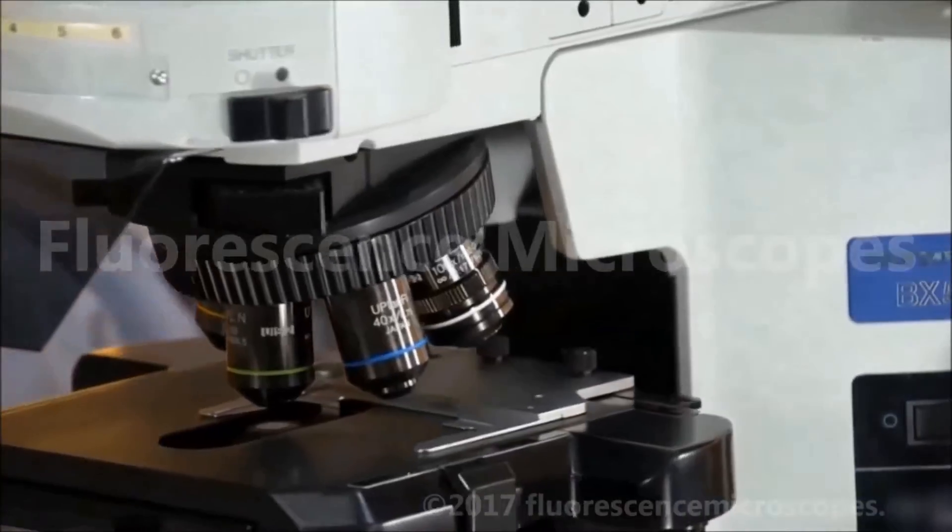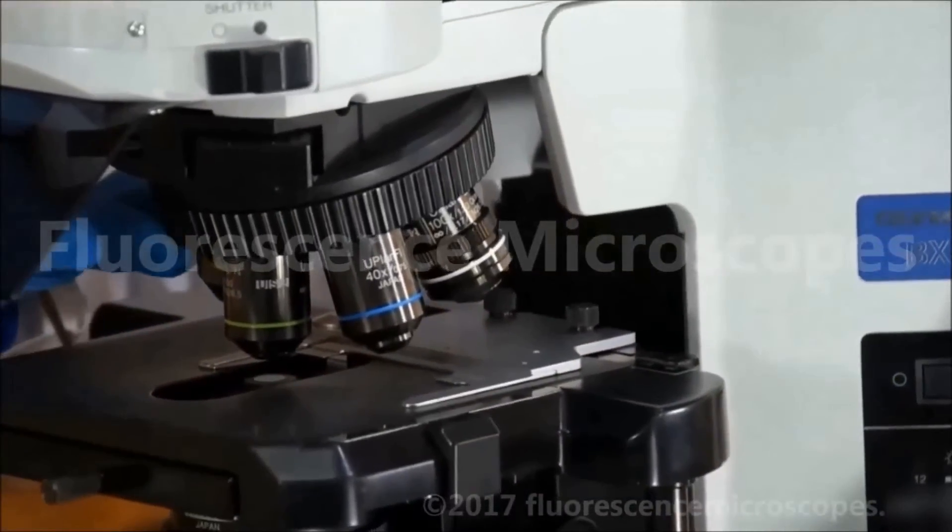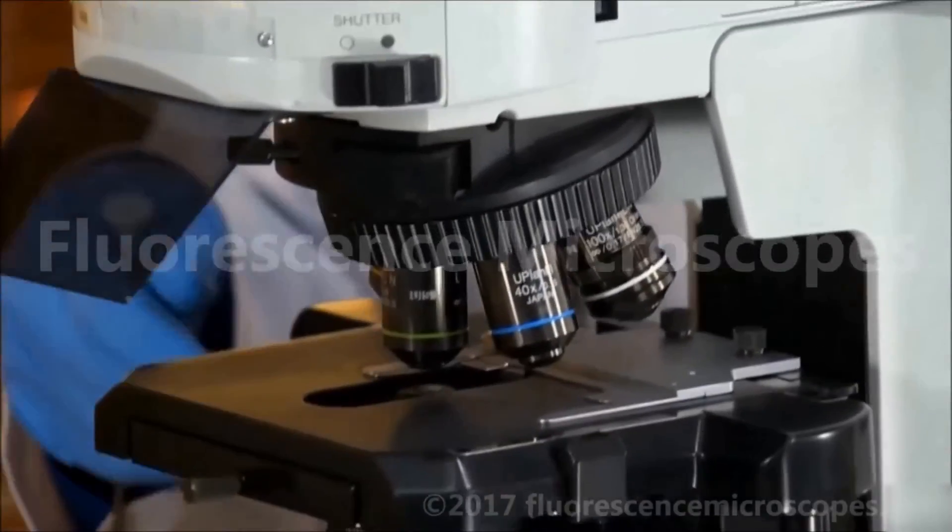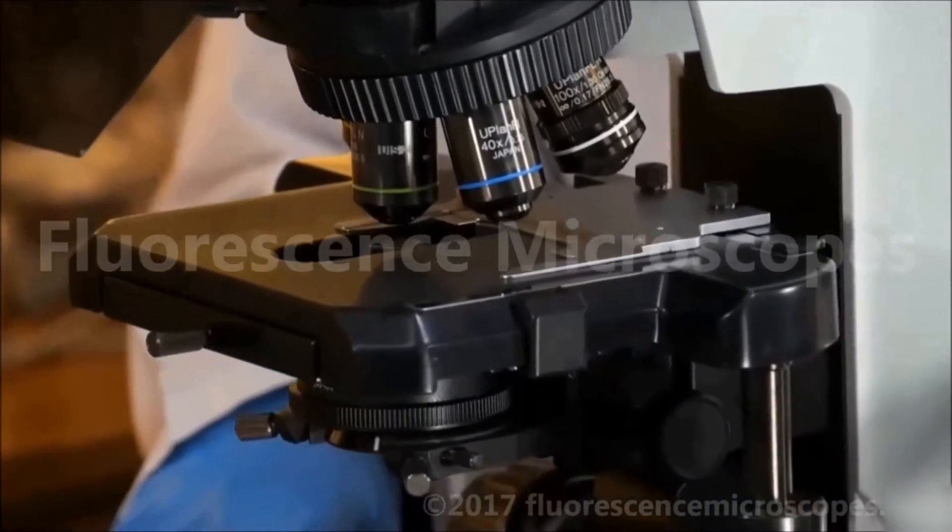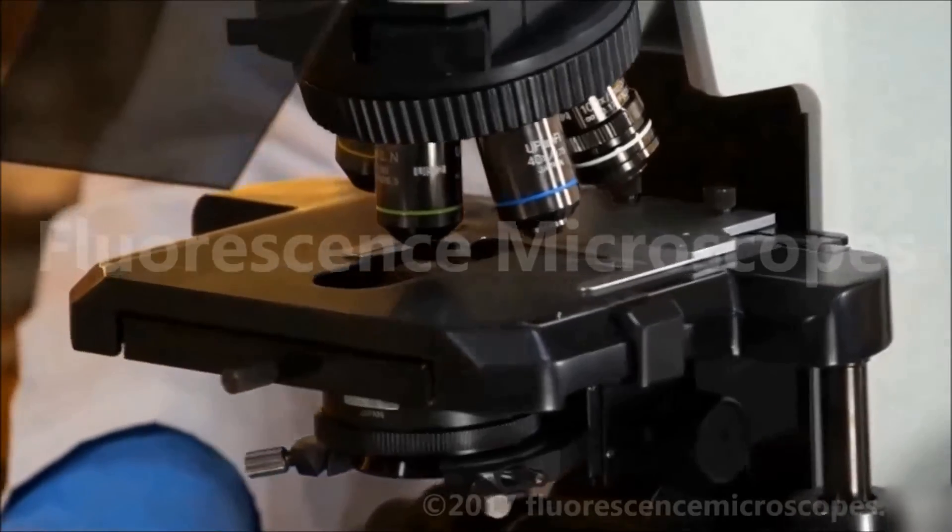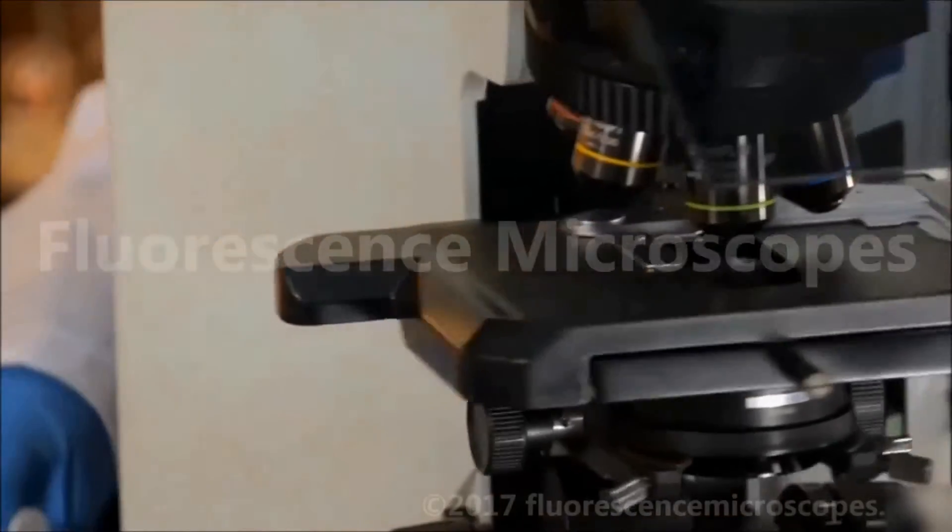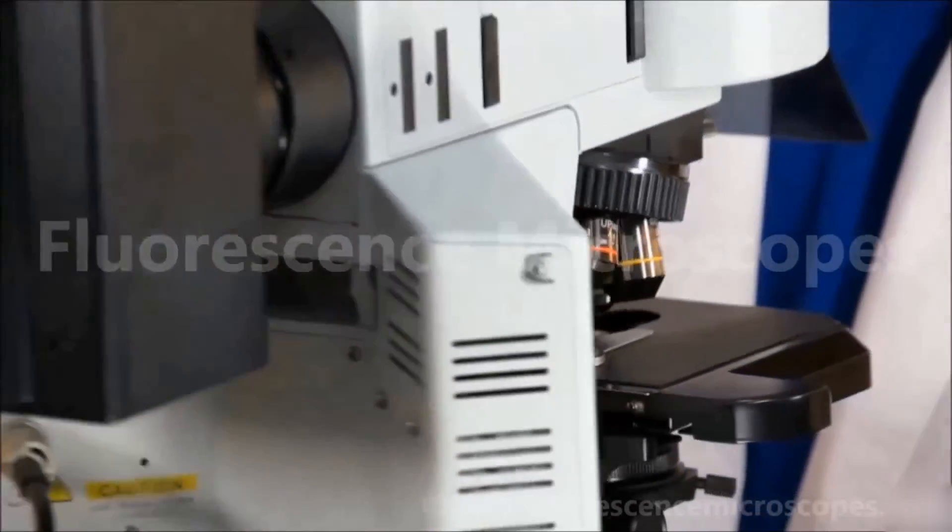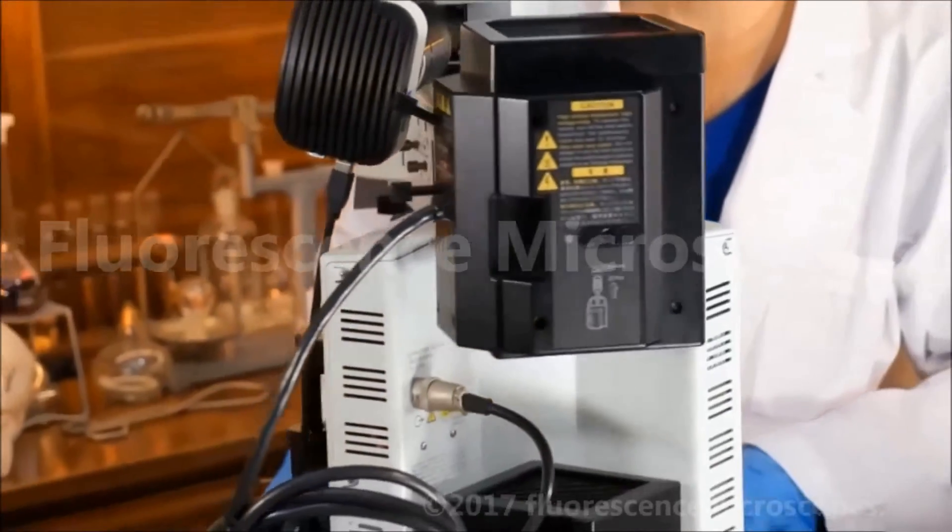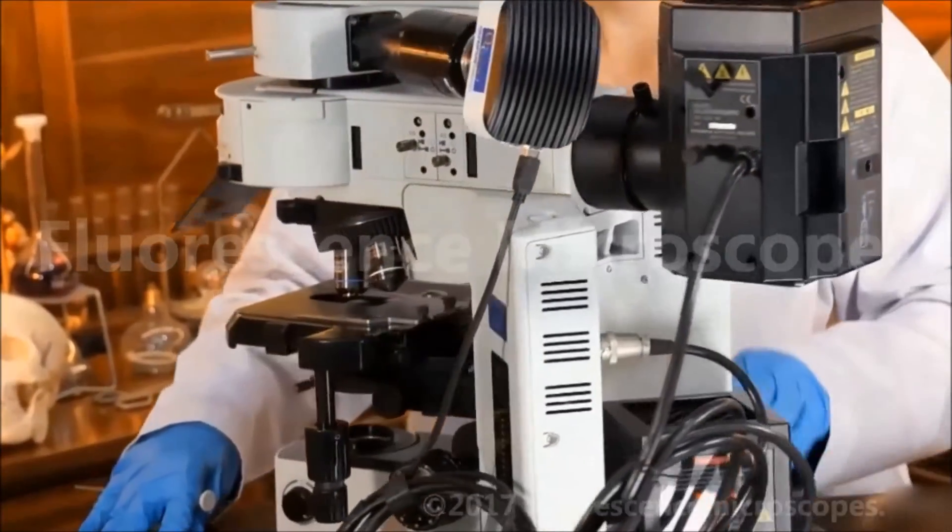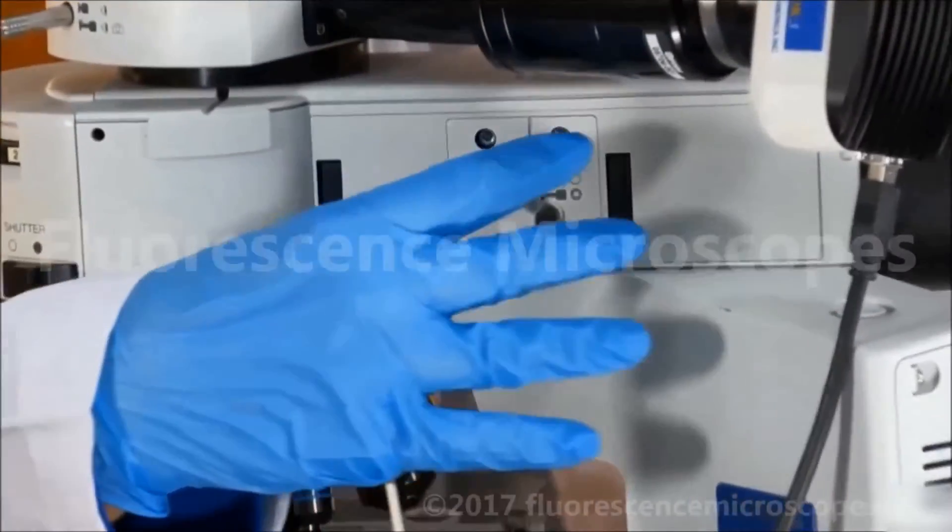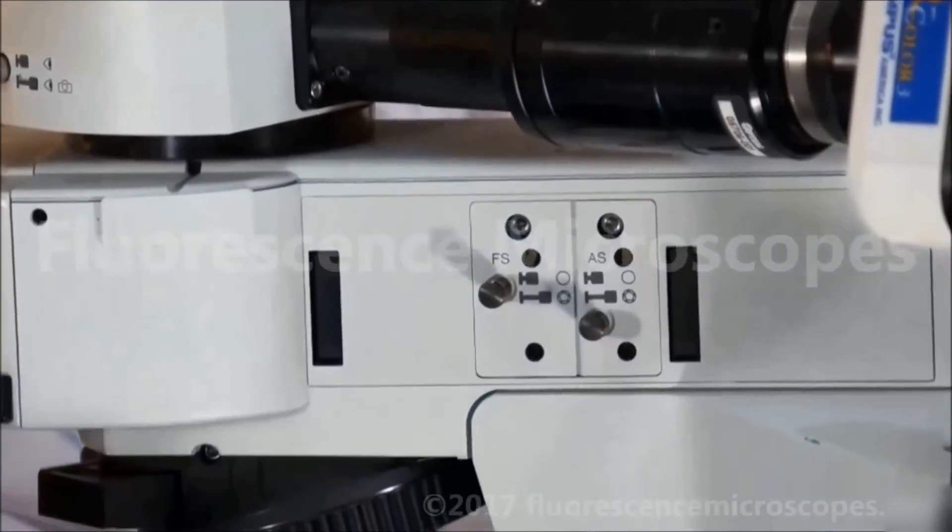We can configure your objectives however you want as well. We have a lot of different objectives. You have a field stop and an aperture stop both with centering all on this side. That's on the epi illumination light path, the vertical illuminator.